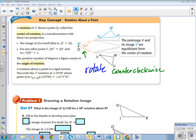The positive number of degrees a figure rotates is the angle of rotation. And we did rigid motion yesterday, it just means that all of our dimensions and angles stay the same.